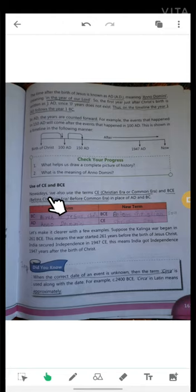Nowadays we also use the terms CE, Christian Era or Common Era, and BCE, Before Christian Era or Before Common Era, in place of AD and BC.